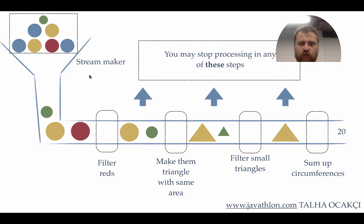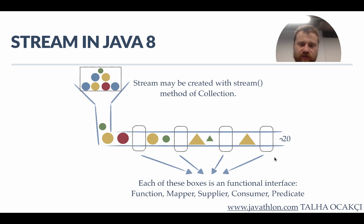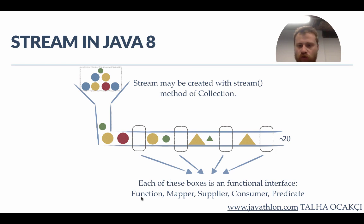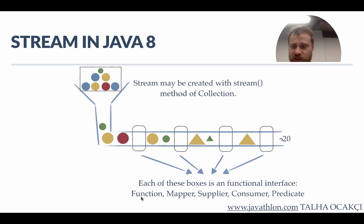In the previous chapter we talked about how a stream works — it simply filters and transforms the data coming from a collection one by one and outputs a result. Each of the boxes is a functional interface which can be a function, mapper, supplier, consumer, or predicate. We may use functions to transform a given data into a new object, or we may use a supplier when we don't have an object, or we may use a consumer if we don't want to transform the data but just print out something or write some data into a text file.